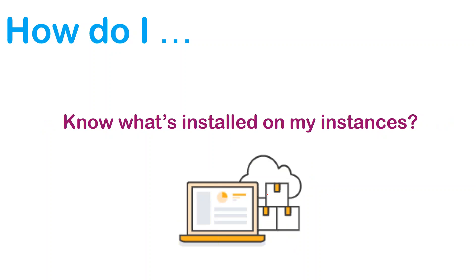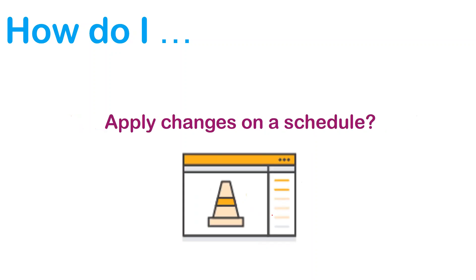Another scenario is: how do I know what is running in my instances? What is the version of the package that was installed last time, and what is the version we need to go into? What version is out of support, or what version is within the license given by the vendor? We need to have an inventory of all the packages and libraries running in our systems.